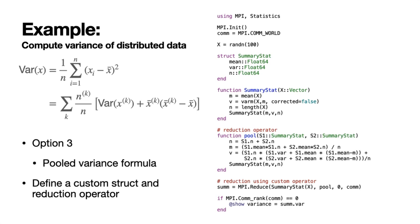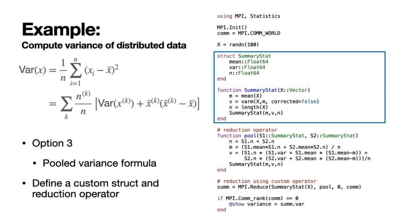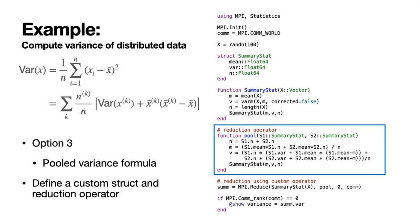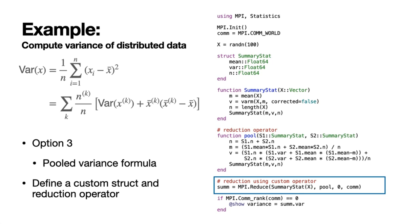An improved version is to use the custom data types and reduce operators provided by MPI. We do this by first defining a summary struct which contains the necessary data for each rank — in this case, the mean, the variance, and the length of the vector. Then we define a reduction operator which we use to combine them. This contains the necessary information for computing the pooled mean as well as the pooled variance. We then pass those to MPI.Reduce, which will use the custom reduction operator to compute our shared variance.